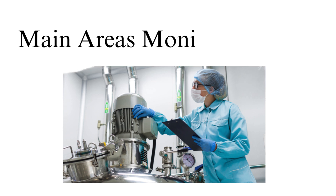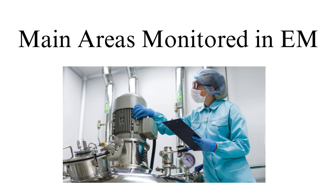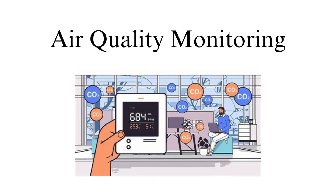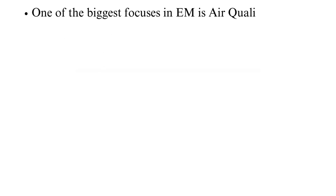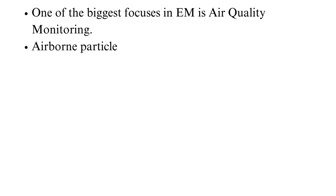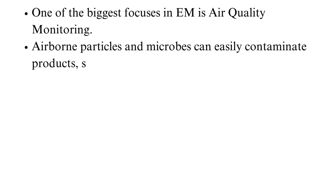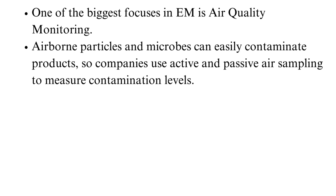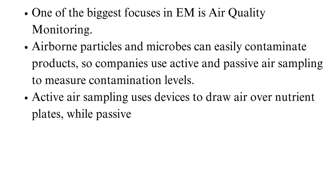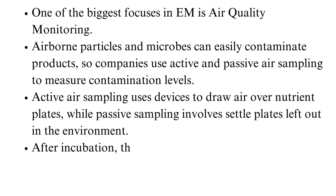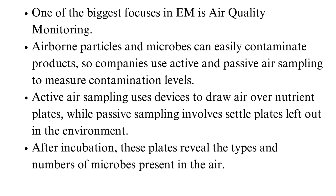Let's talk about the main areas monitored in environmental monitoring, as outlined by GMP. Air quality monitoring is one of the biggest focuses in EM. Airborne particles and microbes can easily contaminate products, so companies use active and passive air sampling to measure contamination levels. Active air sampling uses devices to draw air over nutrient plates, while passive sampling involves settle plates left out in the environment. After incubation, these plates reveal the types and numbers of microbes present in the air.